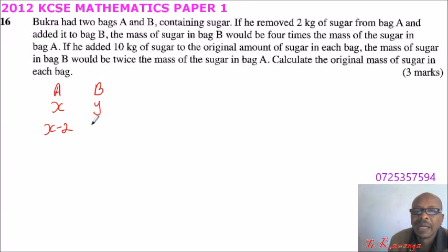The mass in B would be 4 times the mass of the sugar in A. So we add Y plus 2. So we can now say, since we are told that the mass in B, we can say Y plus 2 is equals to 4 times the mass in A. So it is 4 times X minus 2.